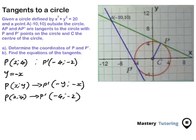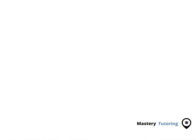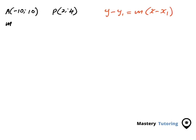Now we have the coordinates of P and P'. We are now doing part B, which says: find the equations of the tangents. We're going to start with the equation of line AP. Remember the equation of a straight line is y minus y1 equals m times (x minus x1), so we need to find the slope first.